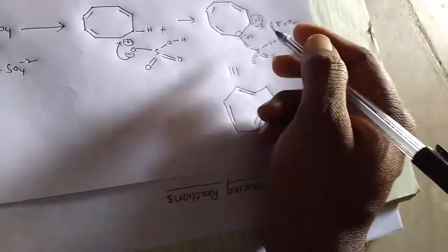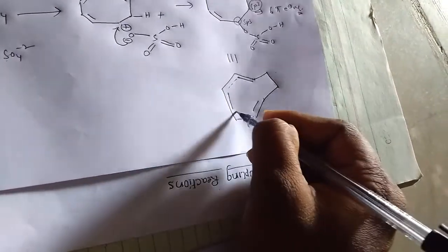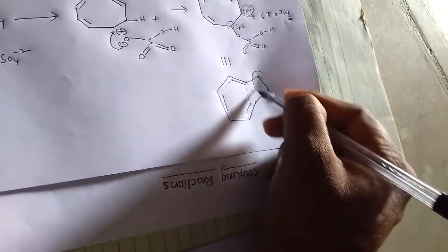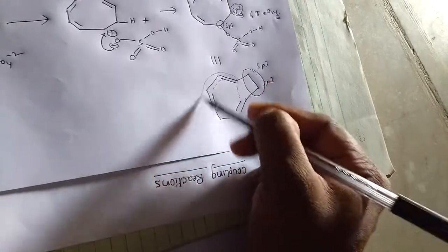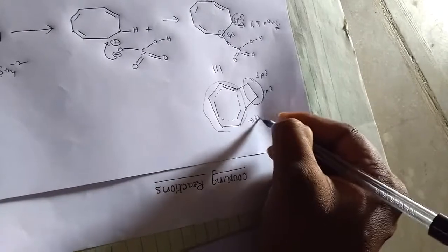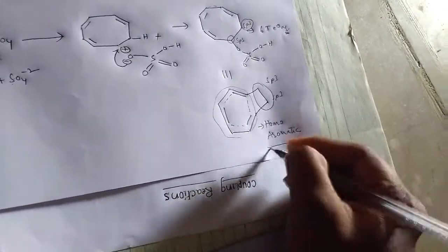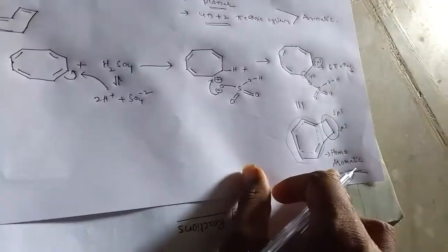Because sp3 carbons lie above the plane of the molecule, the 6 π electrons can still delocalize through space across the sp3 carbon. This type of aromaticity, where conjugation is interrupted by an sp3 carbon but delocalization still occurs through orbital overlap, is called homoaromaticity. So the second reaction gives a homoaromatic product.